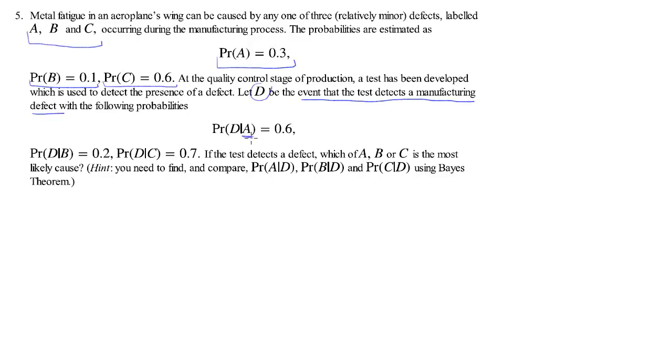Here for instance, given there is a fault A, so conditional on A, what's the probability that we detect the fault? And the answer is 60%. We have similar information for conditional on defect B existing, what's the probability of the test detecting it, 0.2. So quite clearly detecting defect B is much more difficult than detecting defect A. What about defect C? Well there's a 70% probability that our test detects such a fault.